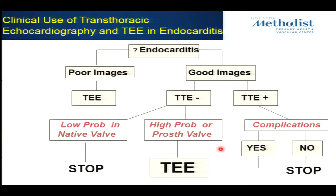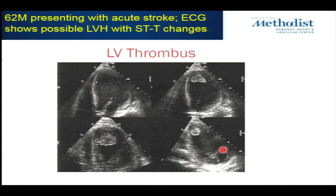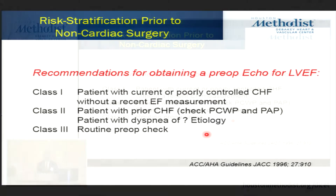When do we need TEE? If you have a vegetation already on your transthoracic study that is diagnostic, you really don't need TEE unless you're looking for complications. But if I'm suspicious and need better resolution, then you do a transesophageal echocardiogram. Low probability — you don't need it. High probability but I'm not seeing anything, or prosthetic valves — definitely you need a transesophageal. And echo is also important to look at complications in people with heart failure or previous infarction, such as a huge clot in the atrium.